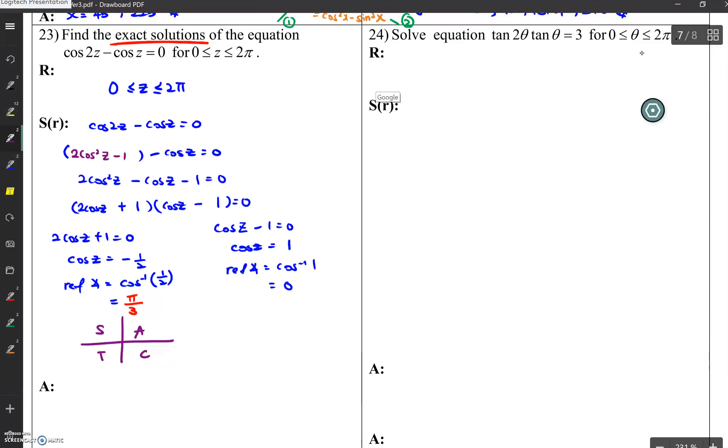So, for this case, I want to get cosine value that is negative. Which quadrant of cosine will give me a negative value? It's the second and third quadrant. So, if it's the second quadrant, I'll take pi minus reference angle. If it's the third quadrant, I'll take pi plus reference angle here.